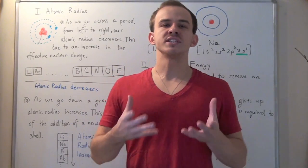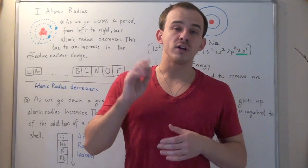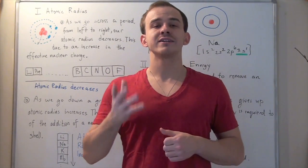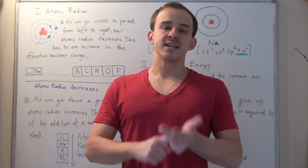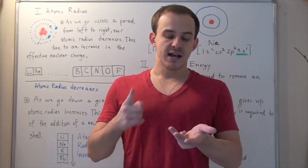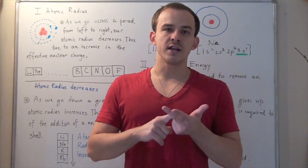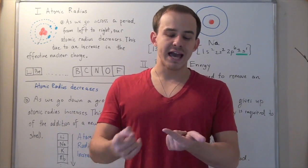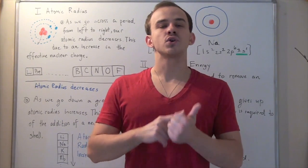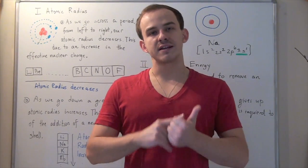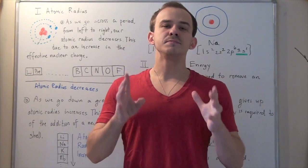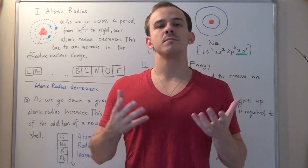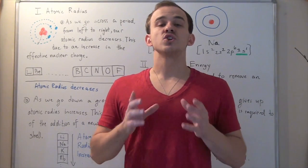In this lecture, we're going to talk about four important periodic trends: atomic radius, ionization energy, electronegativity, and electron affinity of atoms. Now let's begin with the atomic radius.